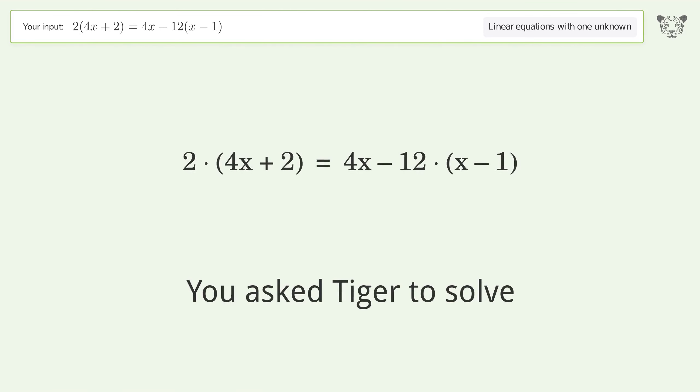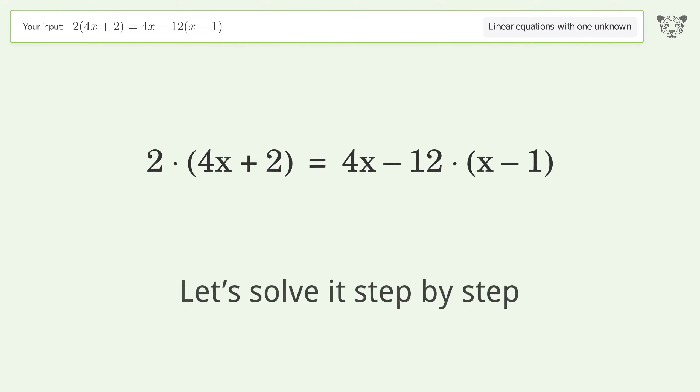You asked Tiger to solve this. It deals with linear equations with one unknown. The final result is x equals 1 over 2. Let's solve it step by step.